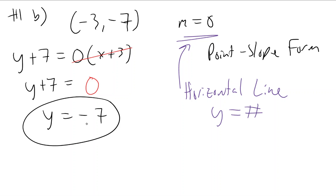So to go through these points, it has to go through that y value. So a visual of that, if it has to go through negative 3, negative 7, and it has to be a horizontal line, that would have to be y equals negative 7.